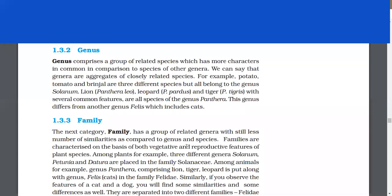Genus comprises a group of related species which has more characters in common in comparison to species of other genera. We can say that genera are aggregates of closely related species. For example, potato, tomato, and brinjal are three different species but all belong to the genus Solanum. Lion, leopard, and tiger with several common features are all species of the genus Panthera. This genus differs from another genus Felis, which includes cats.